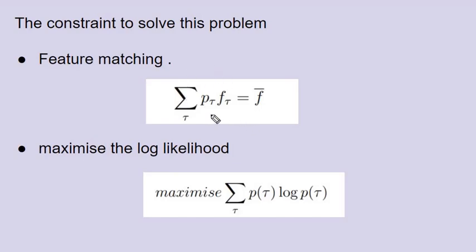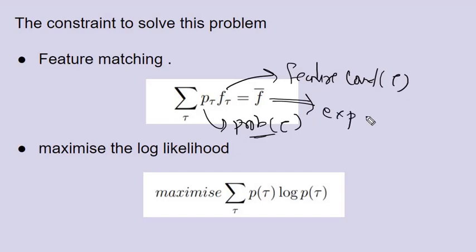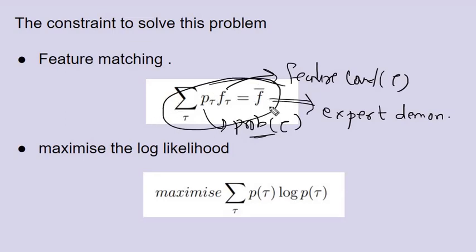We can solve this as an optimization problem where the constraint is that the expected feature count under the trajectory selection probability must equal the feature count of the expert demonstrations. This is the feature matching constraint, which we covered in the first video.